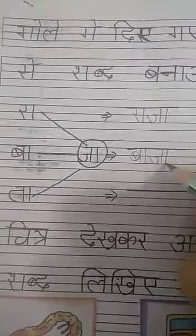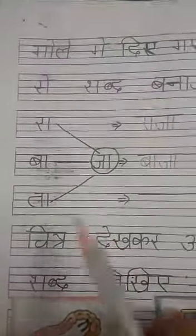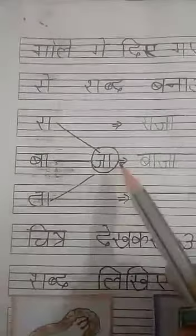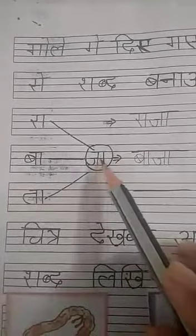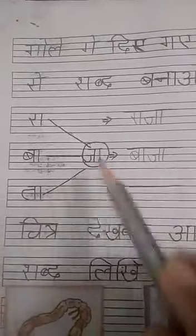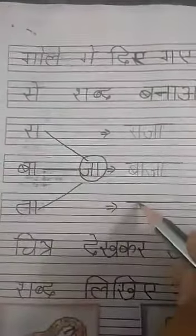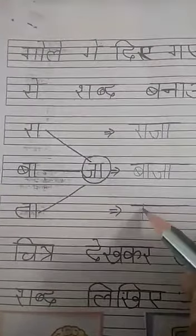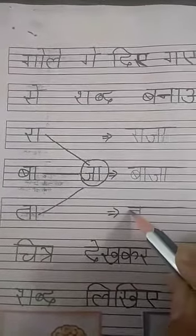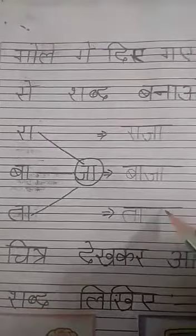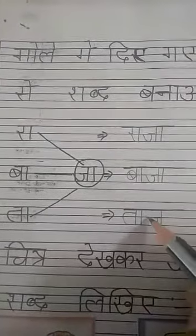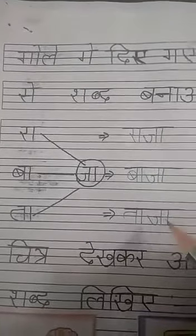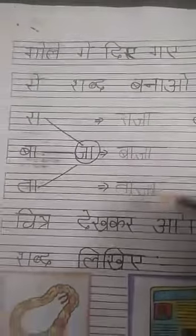Ba, Ja. Next: Ta, Ja — Ta, Ja — like this. Standing line, sleeping line, turn, go down. Standing line, sleeping line, go up. Speak out: Raja, Baja, Taja. Next.